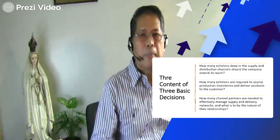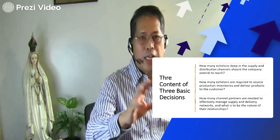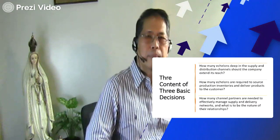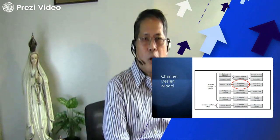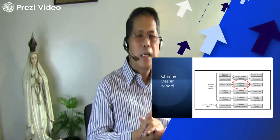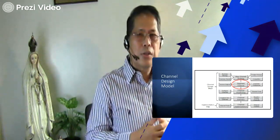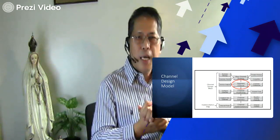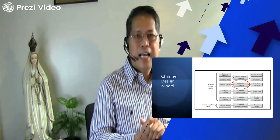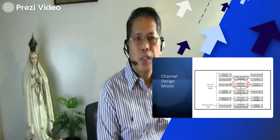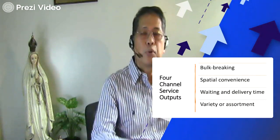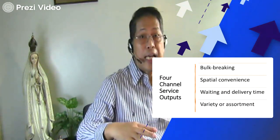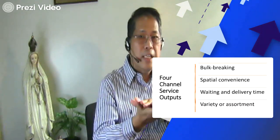Once channel mapping has broadly outlined the configuration of the channel structure, channel designers must then determine the nature of customer demand. The next step is segment channel. In this step, customers are segmented by criteria such as profitability, average purchase, or some other dimensions. Once the market segmentation is completed, the next step is to determine the channel structures that best service the needs of the market segments identified. An important strategy is using the four channel service outputs such as bulk breaking, spatial convenience, waiting and delivery time, and variety or assortment.